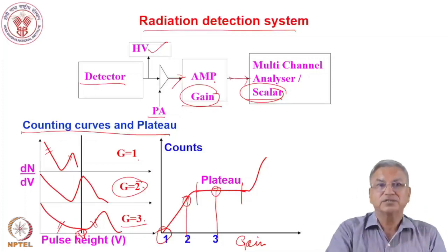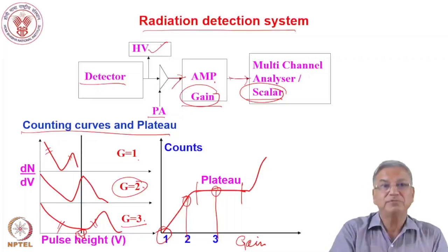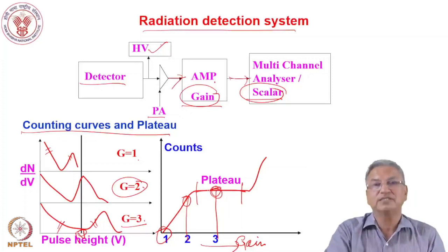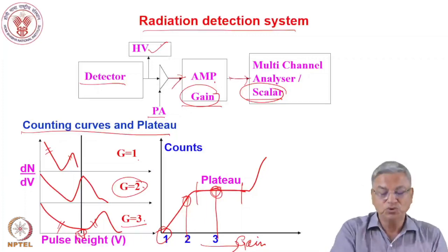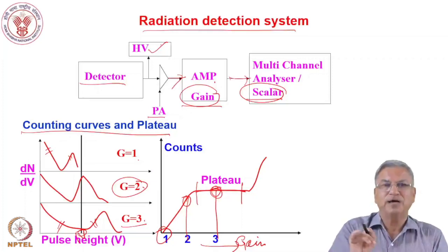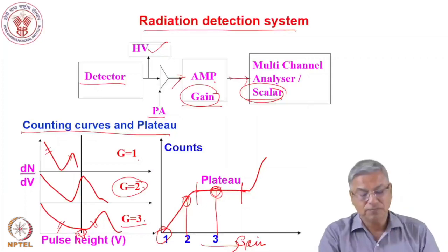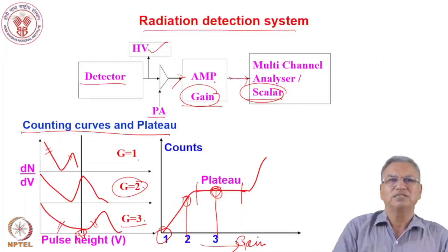In detectors like the Geiger-Müller counter, you can change the gain of the detector system by the high voltage itself. In the GM counter, instead of gain you change the high voltage and find the voltage at which the detector system is stable. Counting curves and plateaus are routinely used in the GM counter to set up the high voltage so the detector system functions properly and gives reliable, stable results.